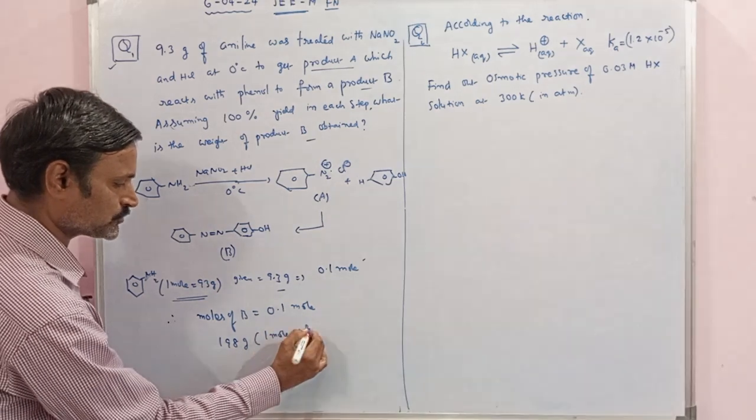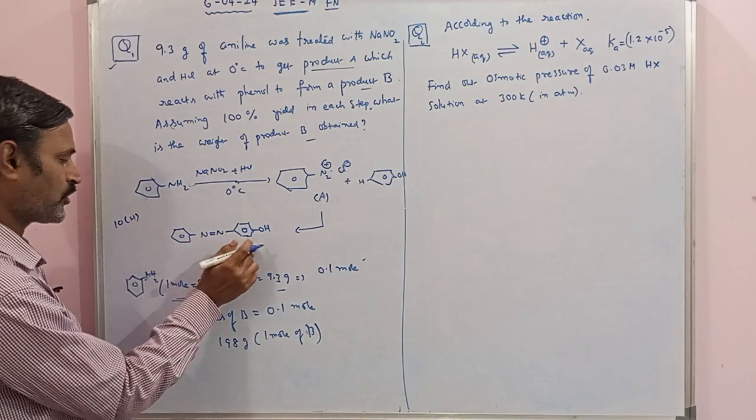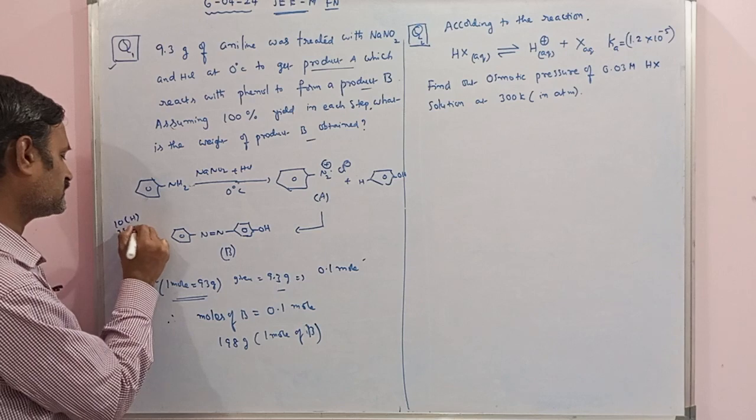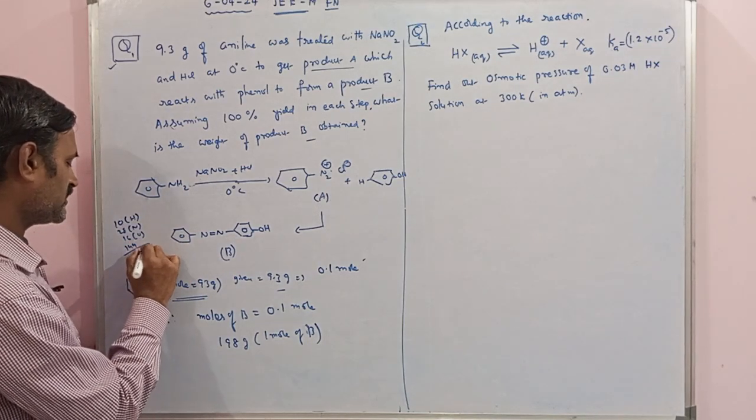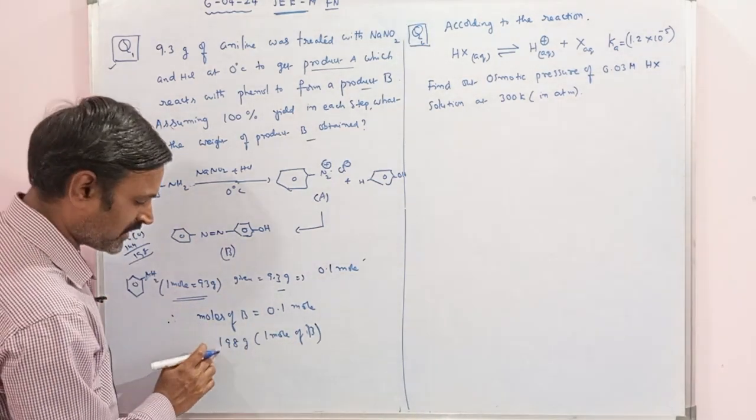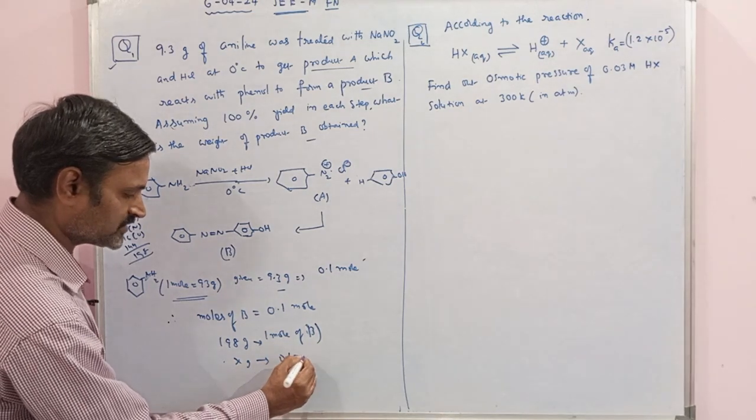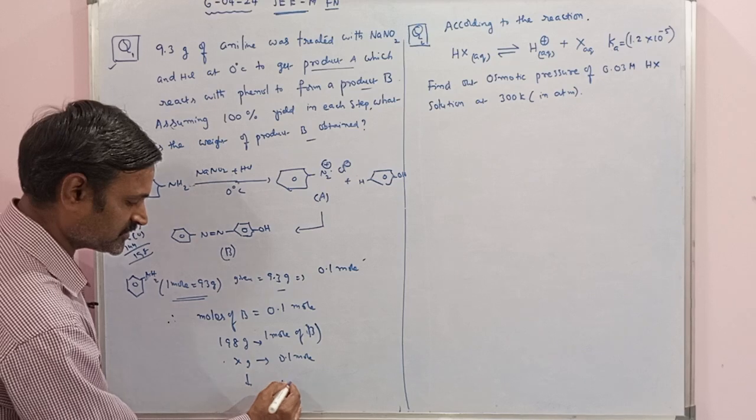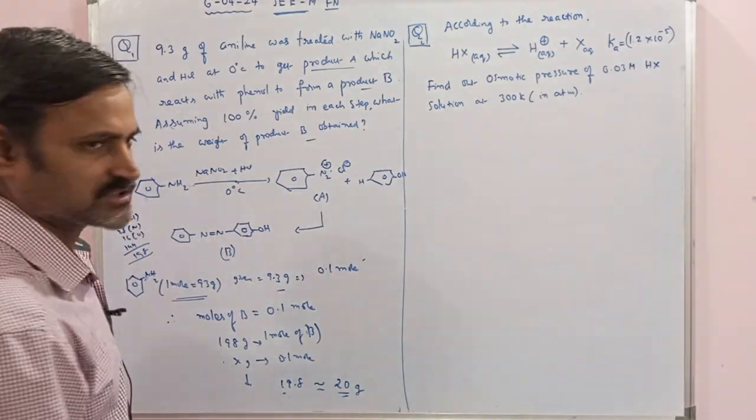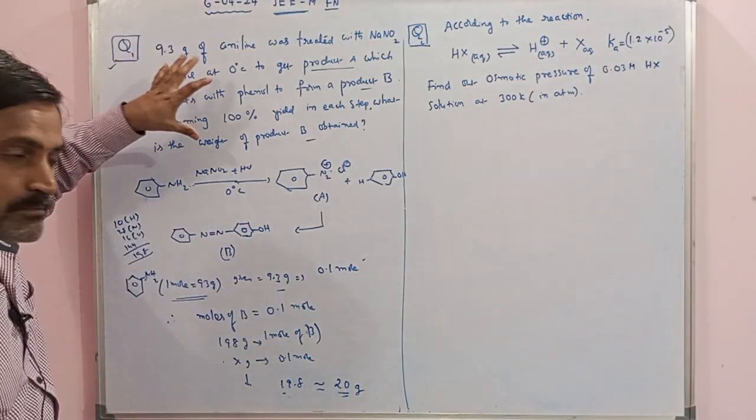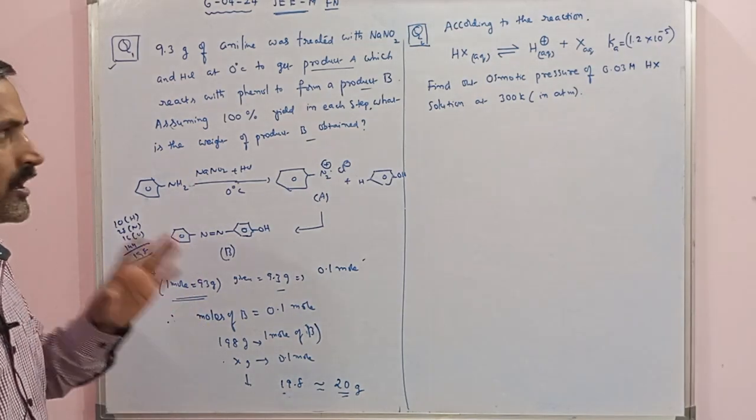We have 10 hydrogens in this product and 2 nitrogens, that's 28, and 1 oxygen is 16, and remaining are 12 carbons, which is 144. The total is 198 grams per mole. So 198 grams is 1 mole, then 0.1 mole is how many grams? That is X grams. 0.1 mole means divided by 10, so the answer is 19.8. The nearest integer is 20 grams, which is the answer for this question.